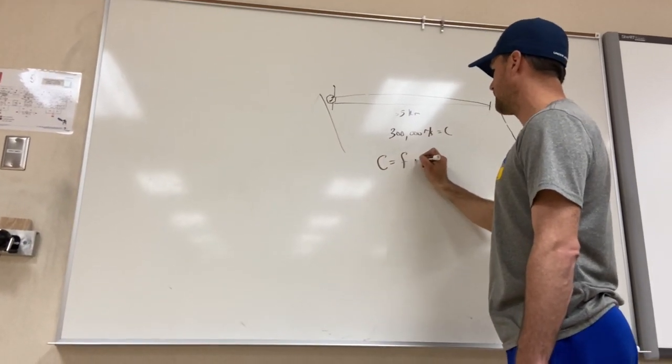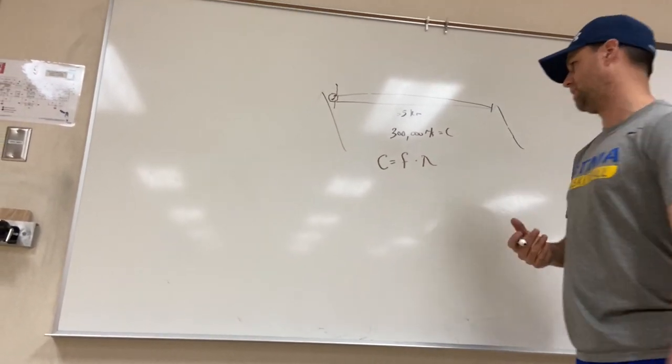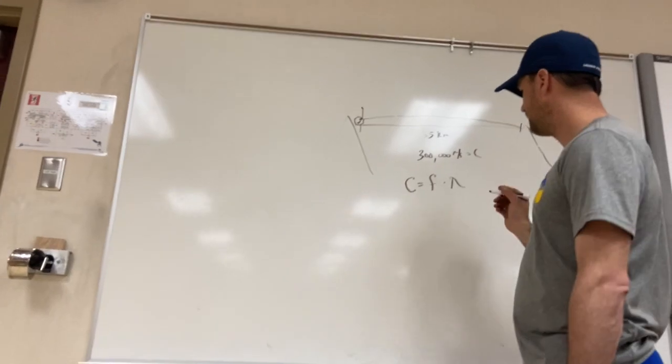So we use the equation C equals F times lambda. So when we're looking at visible light and we're seeing, oh, we can see something like 400 nanometers.